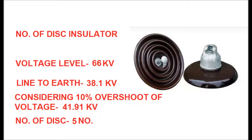For the 66 kV voltage level, the phase-to-phase voltage is 66 kV. The line-to-earth voltage is 66 divided by √3, equal to 38.1 kV. Considering 10% overvoltage: 38.1 × 1.1 = 41.91 kV. Dividing 41.91 by 11 gives approximately 4. Taking an additional margin of 1, the suspension type string uses 5 discs and the tension type string uses 6 discs for a 66 kV system.